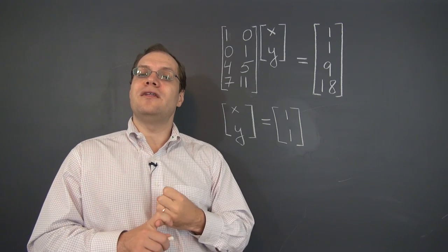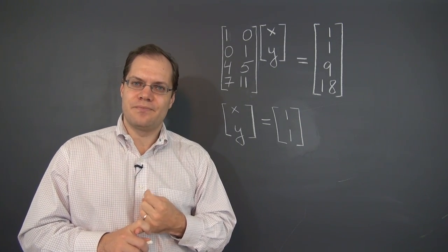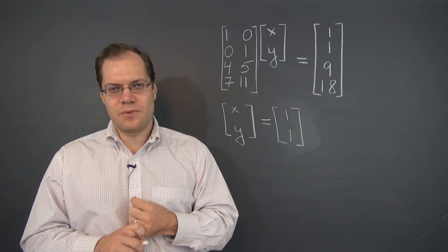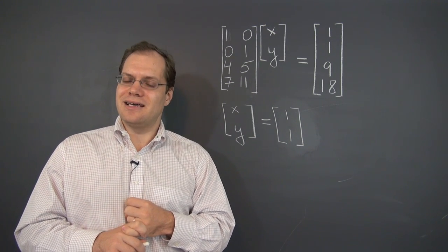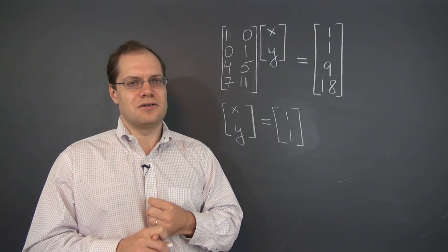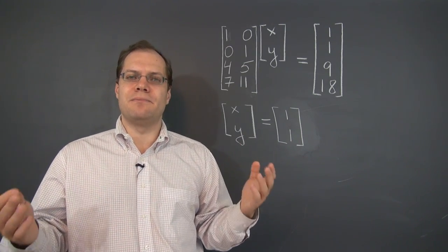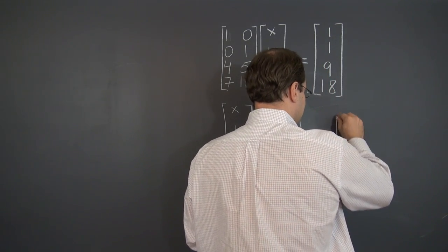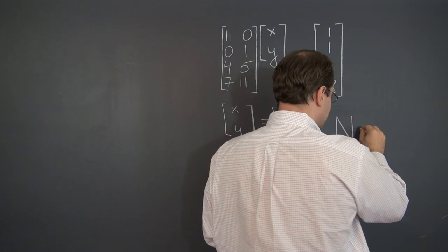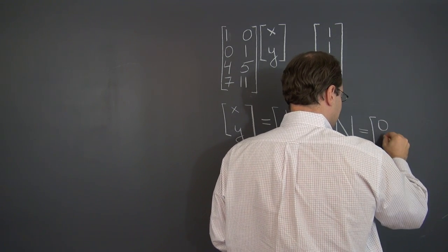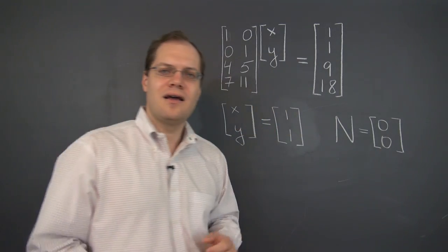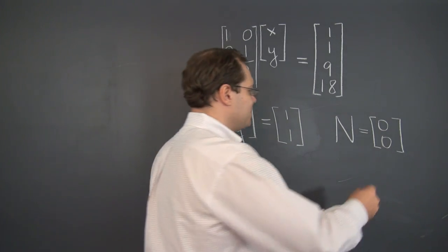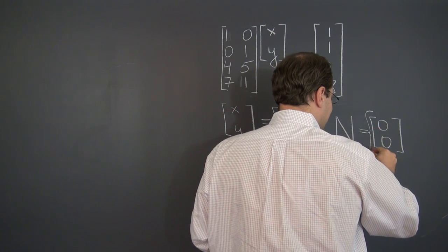What does that mean for the null space? Well, you cannot say that the null space is empty. The null space always has the zero vector in it—the trivial linear combination. So the trivial linear combination does not indicate linear dependence, and in fact these columns are linearly independent, but it's still a legitimate member of the null space and it ought to be mentioned. So what you can write is that the null space consists of the zero vector alone.